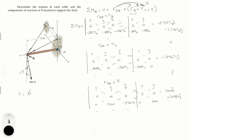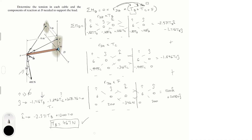In the i direction we have nothing. In the j direction: −1.716·TB − 1.896·TC + 2078.46 = 0. Notice the k equation gives us only one variable that we can check. From the j equation we find TB = 467 Newtons. Plugging TB back into the other equation we can solve for TC = 674 Newtons.